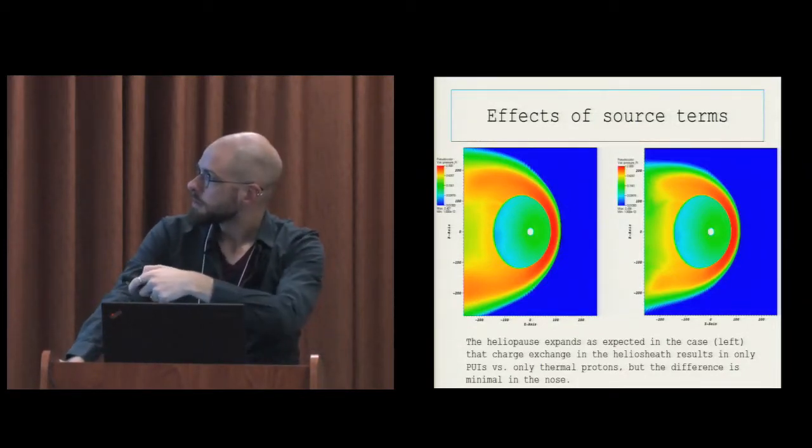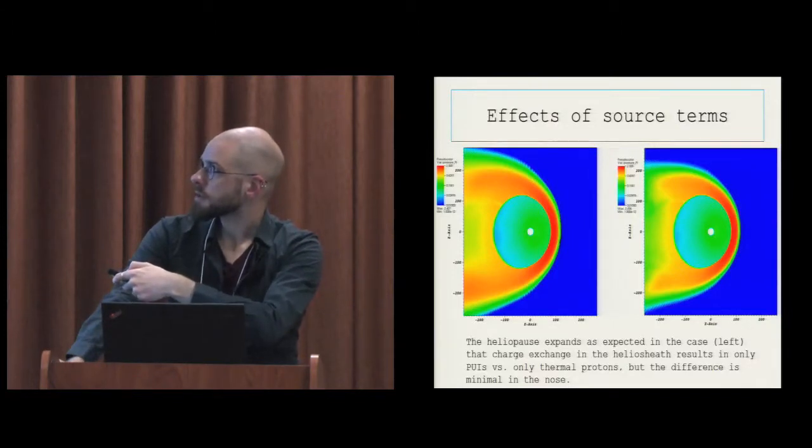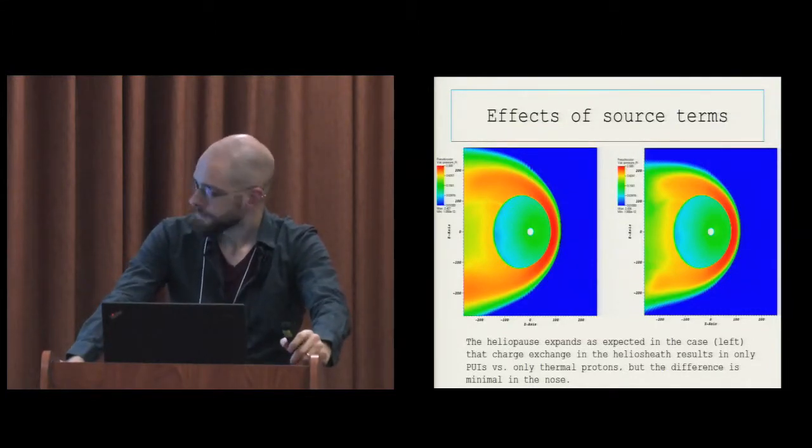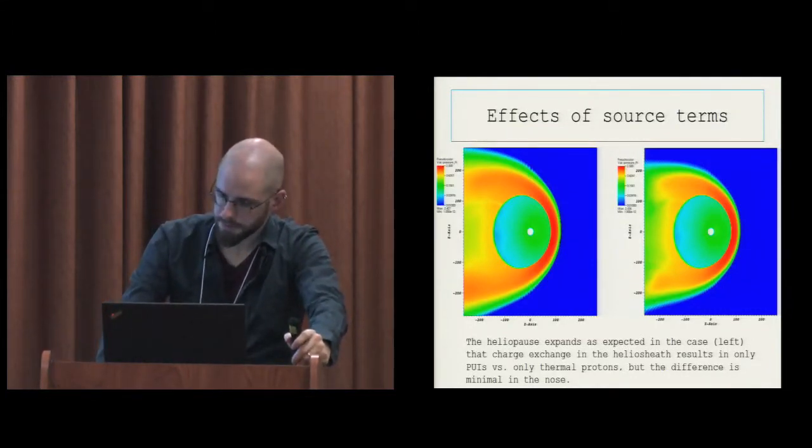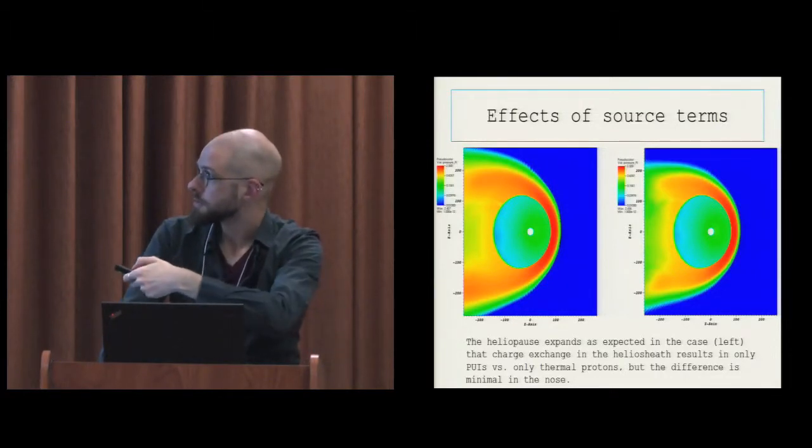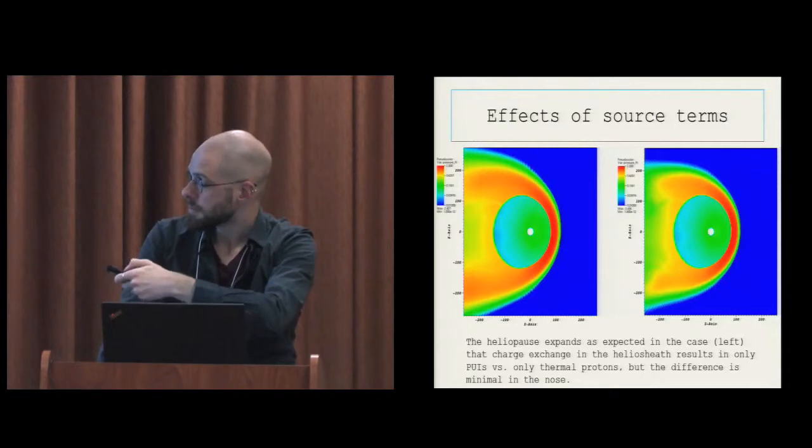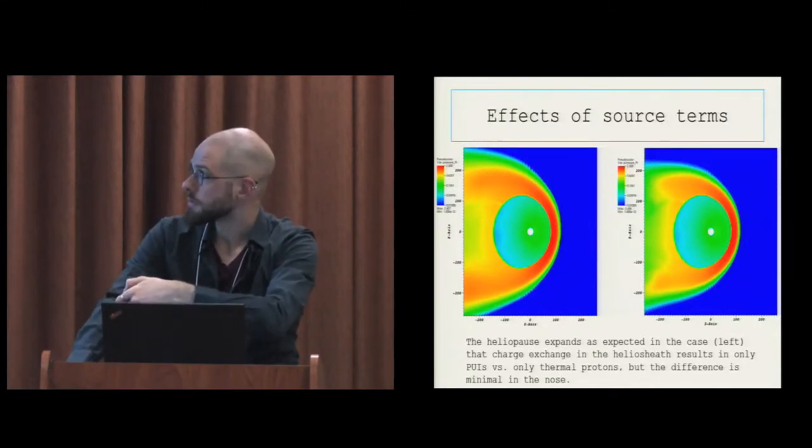Notice how, even though pickup ions are being taken out, they only disappear. They are not created in region 2. There's still enough of them that can back outwards and have a significant effect. That's actually most of the pressure. They form the majority of the pressure here.